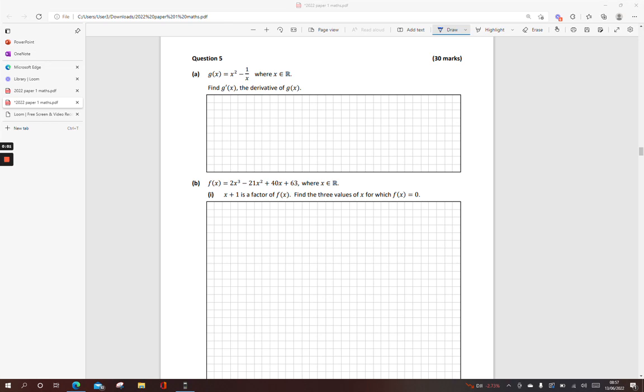Hiya folks, so what we're going to look at here is questions 5 and 6 of the Leaving Cert 2022 exam paper concerning differentiation, functions, all that sort of stuff. The first one here, we're given the function g(x) equals x squared minus 1 over x and we've got to find the derivative.